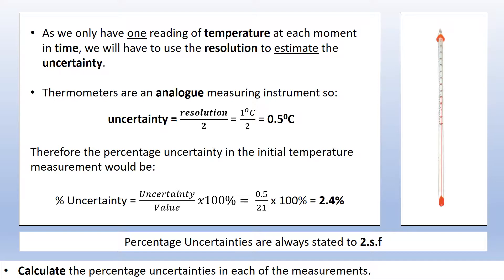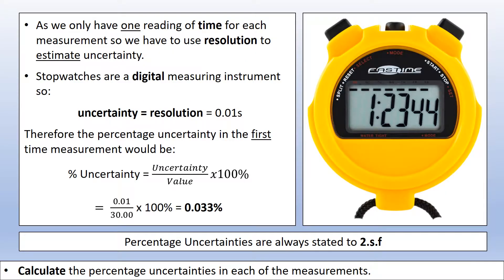We always give percentage uncertainties to two significant figures. For the stopwatch, we again only used one device and took one measurement at a time, so we use the resolution. A stopwatch is a digital instrument, so uncertainty equals the resolution. The percentage uncertainty for the first time reading is 0.01 divided by 30 seconds times 100, giving 0.033%. The contribution from the stopwatch is tiny and insignificant — unlike in experiments like G by freefall or simple harmonic motion, where time is a significant contributor to uncertainty.